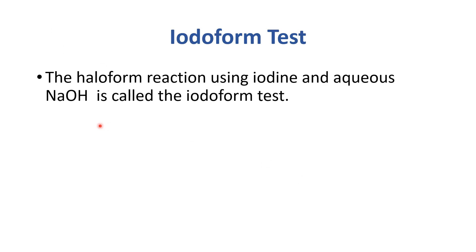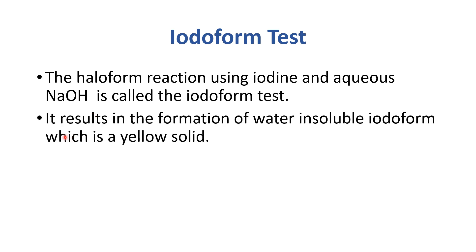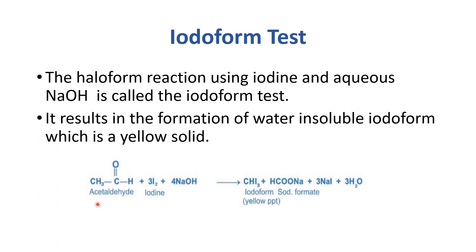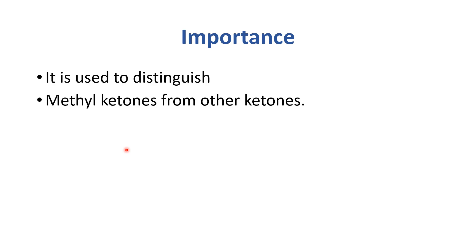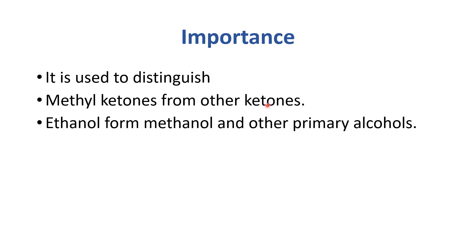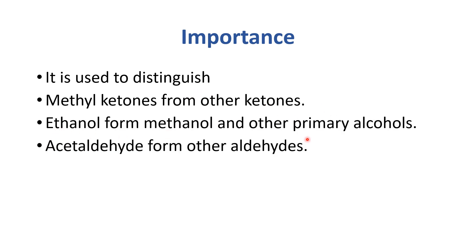Here we have the iodoform test. The haloform reaction using iodine and aqueous sodium hydroxide is called the iodoform test. It results in the formation of iodoform, which is a yellow solid. The iodoform test is used to distinguish methyl ketones from other ketones, ethanol from methanol and other primary alcohols, and acetaldehyde from other aldehydes.